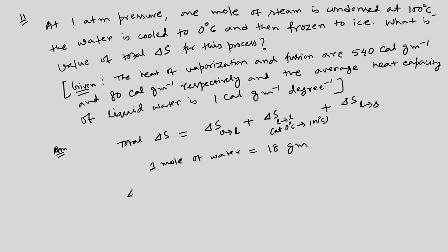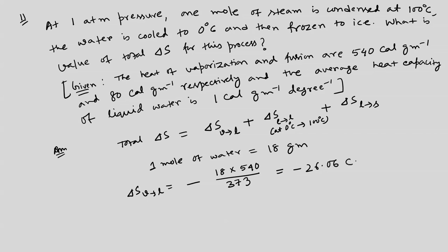For the condensation step (vapor to liquid), heat is released by the system, so we have a minus sign. Delta S_vap_to_liq equals minus 18 times 540 divided by 373, giving minus 26.06 calorie per Kelvin.